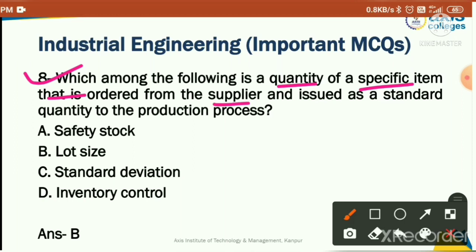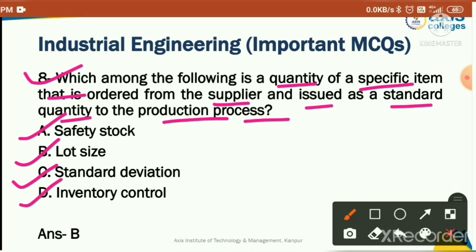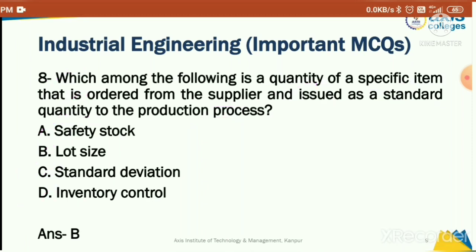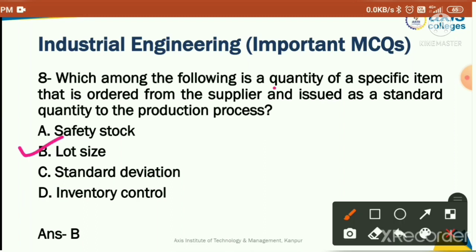Which among the following is a quantity of a specific item that is ordered from the supplier and issued as a standard quantity to the production process? Options: safety stock, lot size, standard deviation, or inventory control. The correct answer is lot size — the quantity of a specific item ordered from the supplier and issued as a standard quantity to the production process.